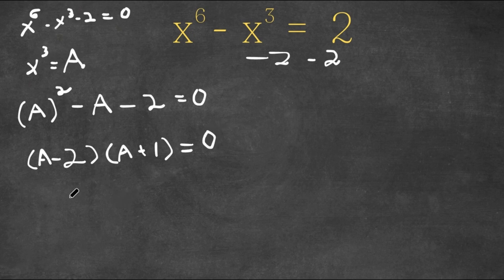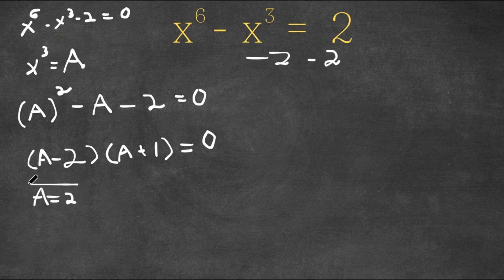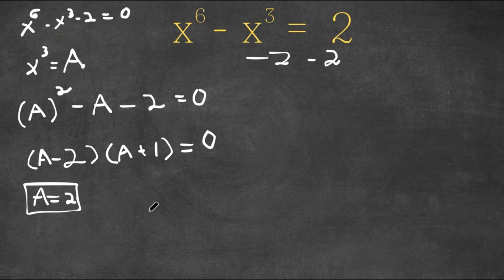And this gives us two equations. We have a minus 2 equals 0, or a plus 1 is equal to 0. If a minus 2 equals 0, then that means that a is equal to 2. And if a plus 1 equals 0, that means that a is equal to negative 1.